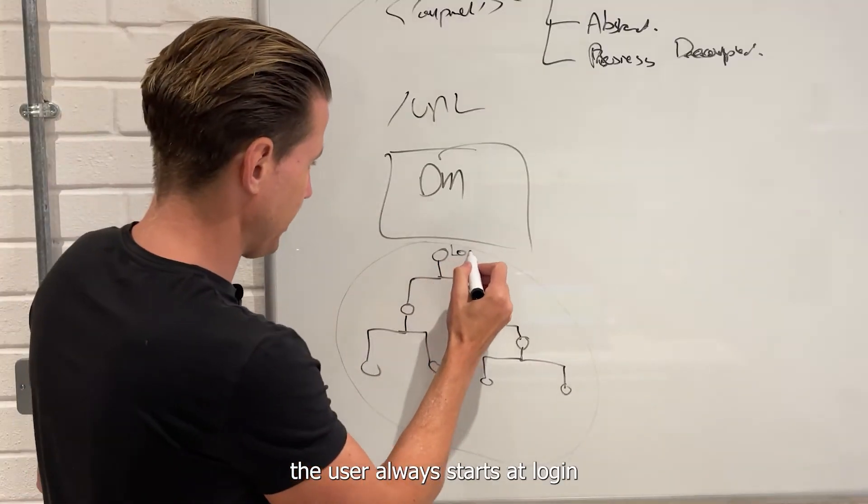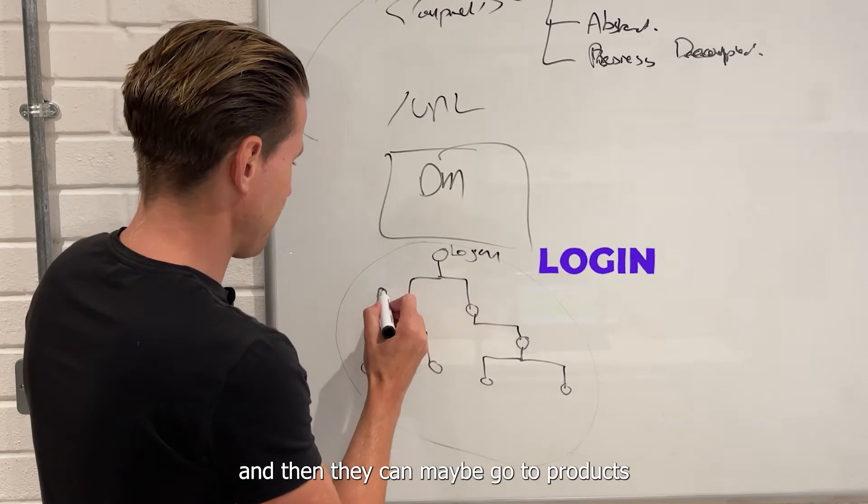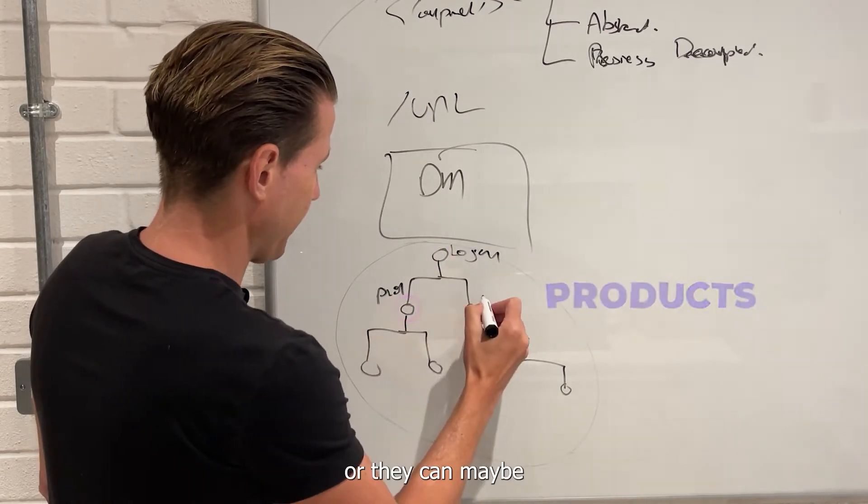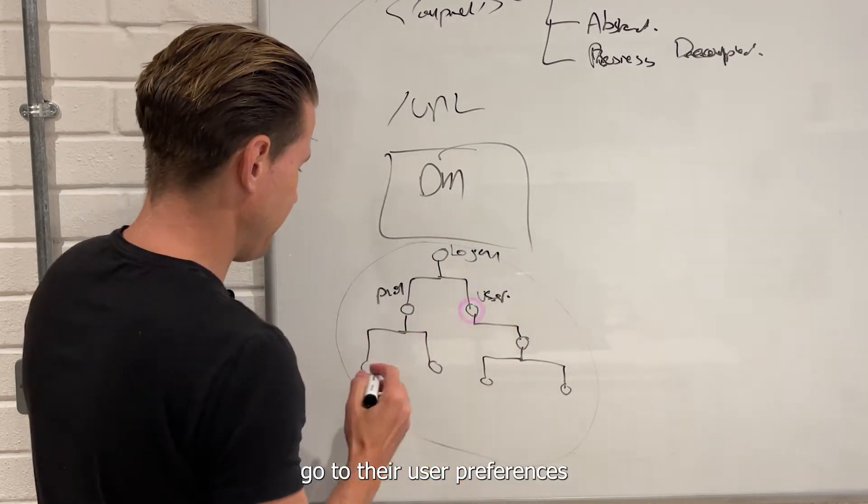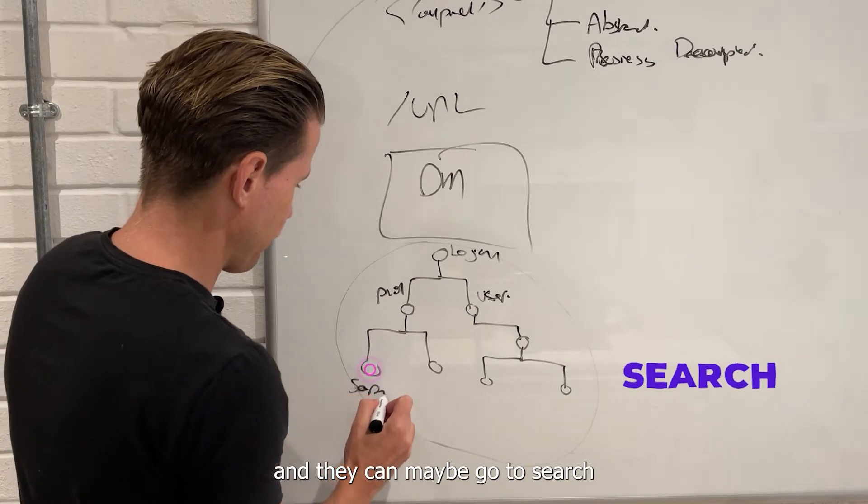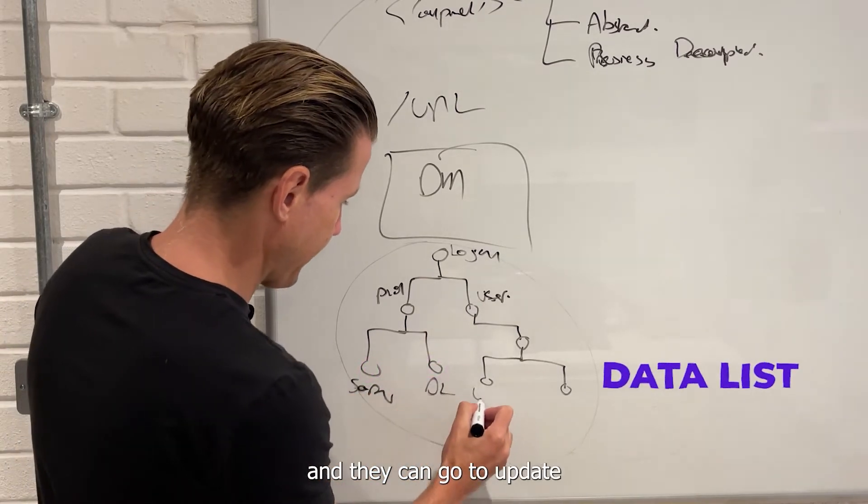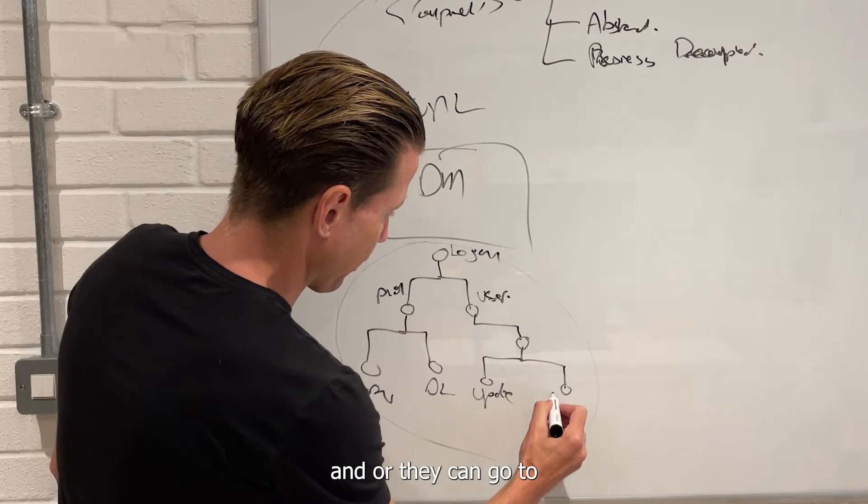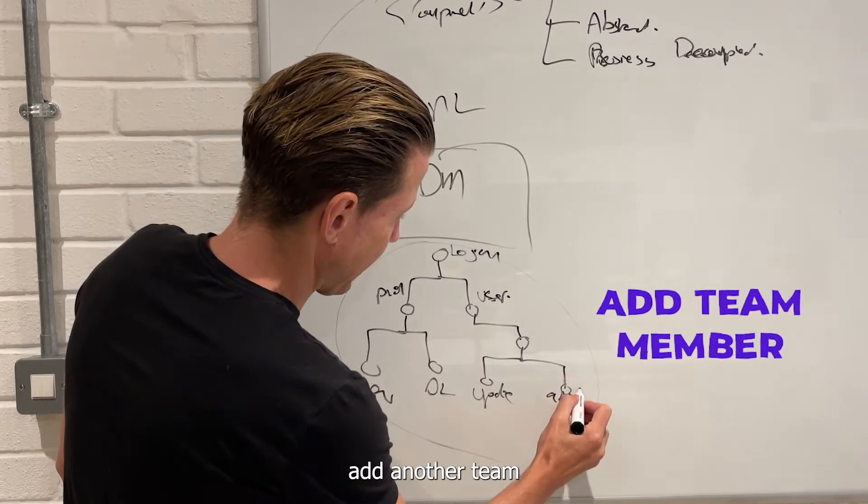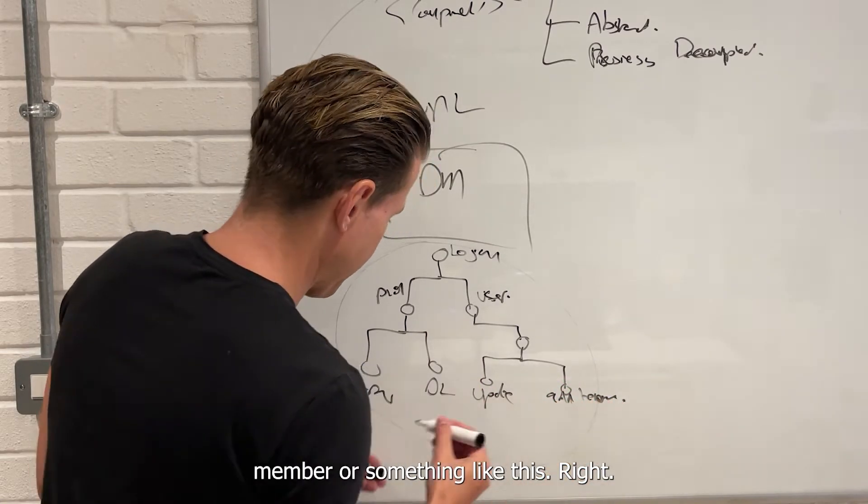We say that whether you're building for mobile or you're building for desktop, or you build for anything, we should be able to represent the entire business process of places that user can go in an abstract data model. So we may say the user always starts at login, and then they can maybe go to products, or they can maybe go to their user preferences, and they can maybe go to search, and they can maybe go to data list, and they can go to update user preferences, or they can go to maybe add another team member or something like this.